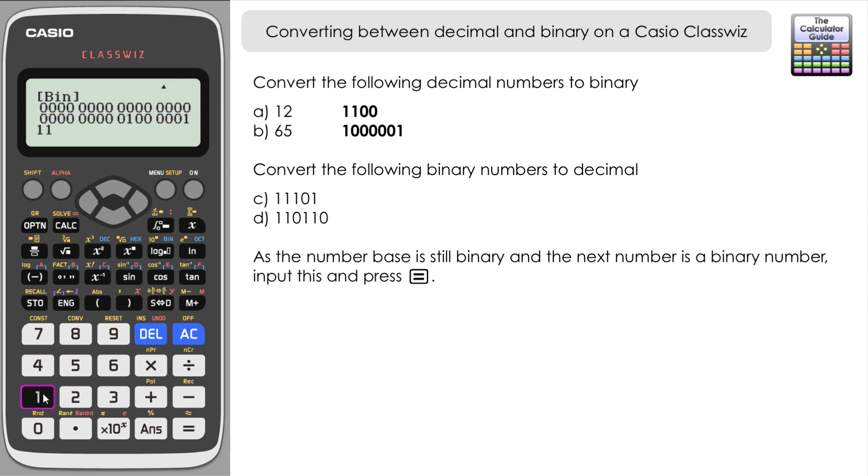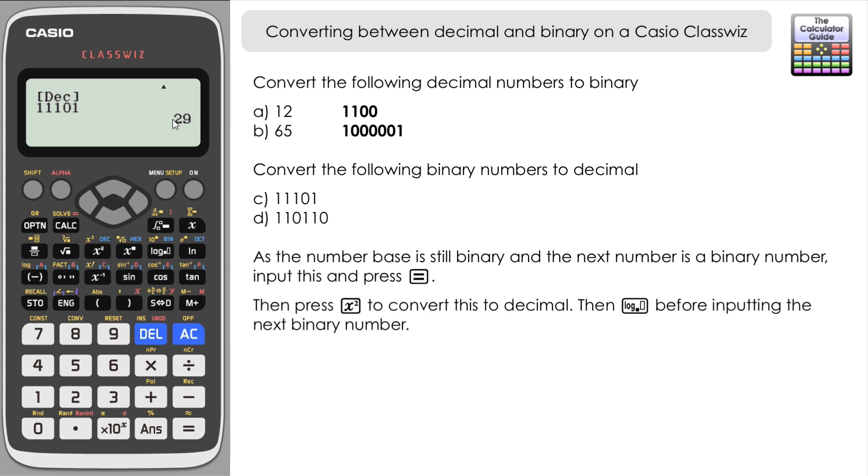It's 11101. Press equals to make that the answer, and you can see it's put it into the usual format for the ClassWiz. Then just press decimal to change that to the decimal equivalent, and you can see that's 29 in decimal.